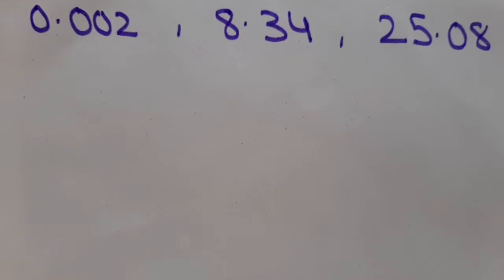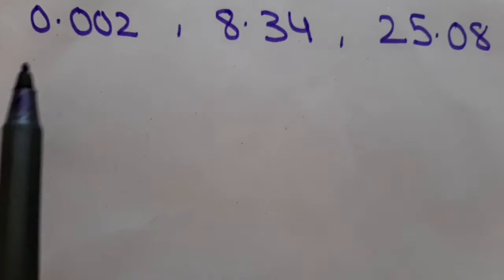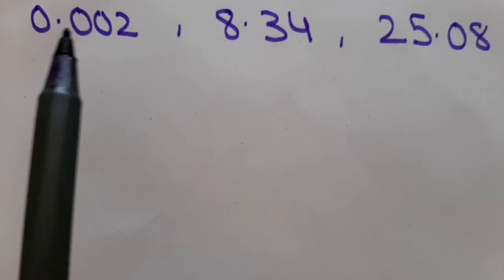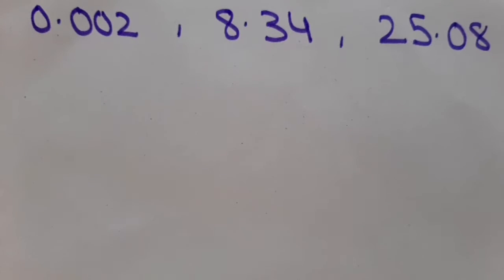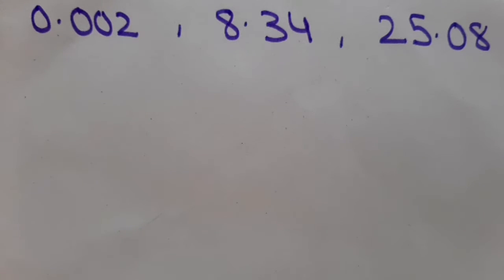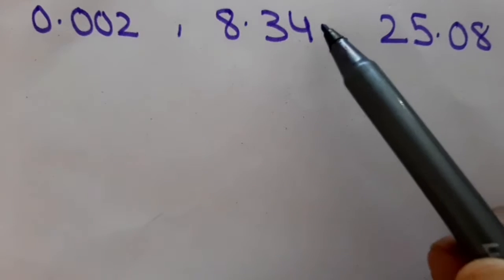These are not like decimals, because the number of digits after the decimal is not the same. In the first number, the digits after the decimal is 3. In the second it is 2, and in the third it is also 2. So the first step is we have to make them like decimals. The maximum number of digits after the decimal is 3, so I will make all of them 3.